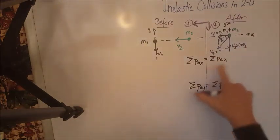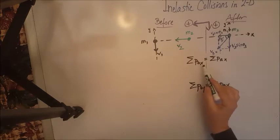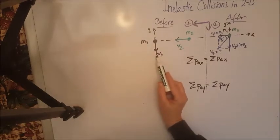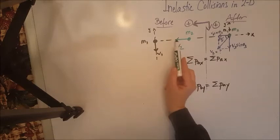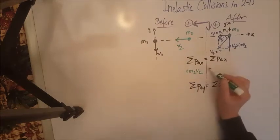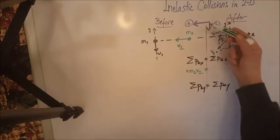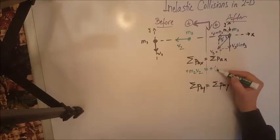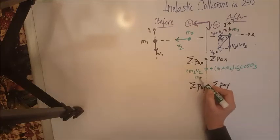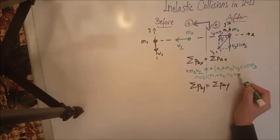Now we are ready to develop these equations further. For the total X-momentum before collision, object M1 moves along the Y so it has no X-momentum, and object M2 moves along the X with its entire velocity V2, which is positive, giving us positive M2V2. After collision, the object M1 plus M2 moves with velocity V3 cosθ3 in the positive direction. So the X equation simplifies to: M2V2 = (M1 + M2) V3 cosθ3.